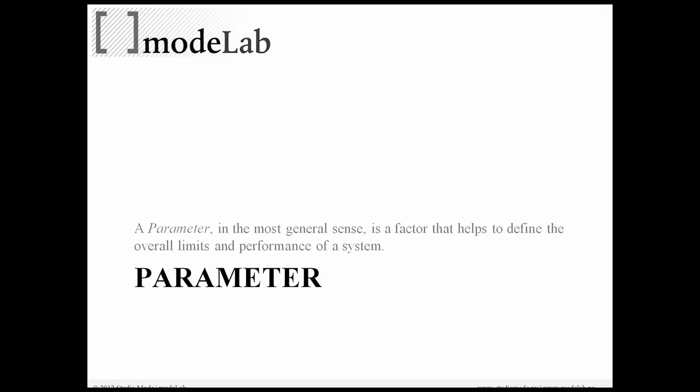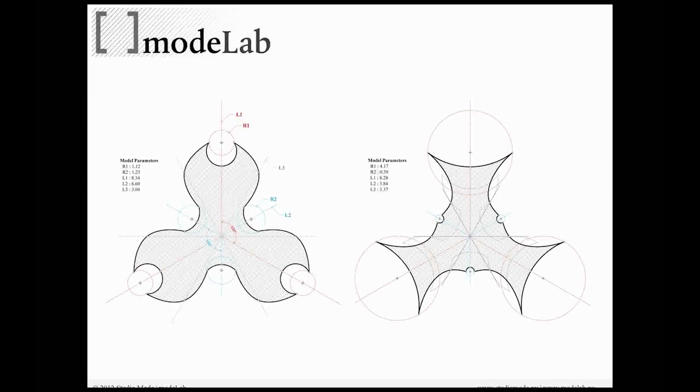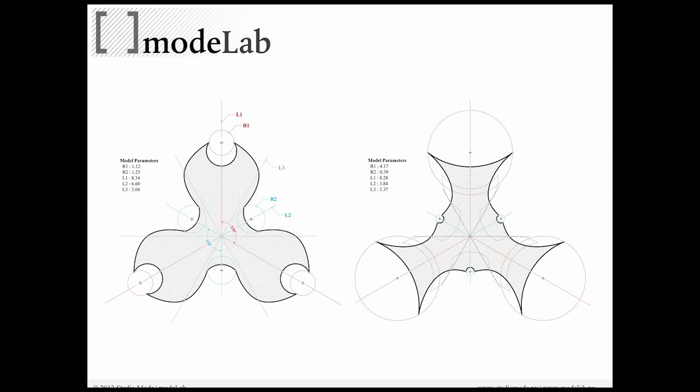Back to parametric modeling for a moment. When we're talking about a parametric model, we're really talking about parameters. In the most general sense, a parameter is a factor that helps to define the overall limits and performance of a system. Here we can see two instances or states of a parametric model where the differing shapes are a byproduct of changes in the parameters which define the overall form.